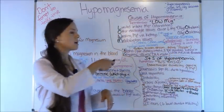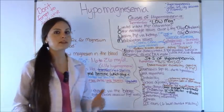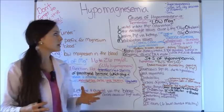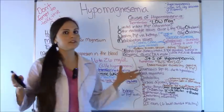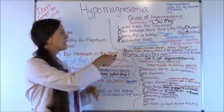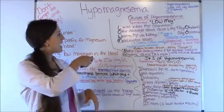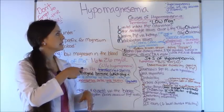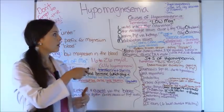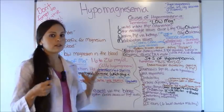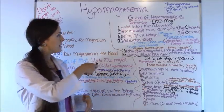Let's look at the causes of hypomagnesemia. To help you remember, I've created the mnemonic LOMAG — we're already dealing with low mag, so this will help you remember. Each letter correlates with a cause. L stands for limited intake of magnesium. You see this in starvation — people who aren't eating have really low mag levels because foods are rich in mag, and if you don't get it, you have low mag levels.